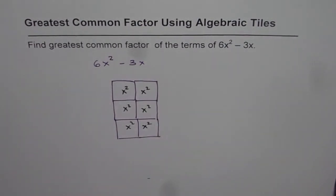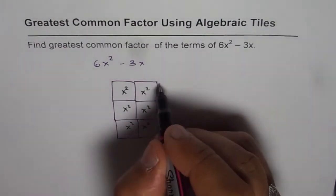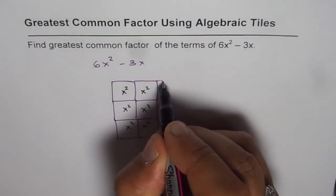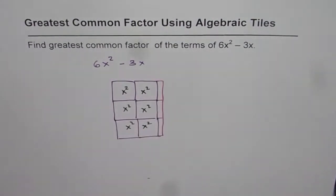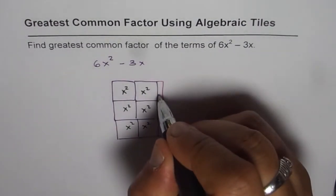Minus 3x, that means we will pick up the negative x tiles, which are the red tiles. So that becomes our 3x tiles, the negative x tiles. These are minus x.